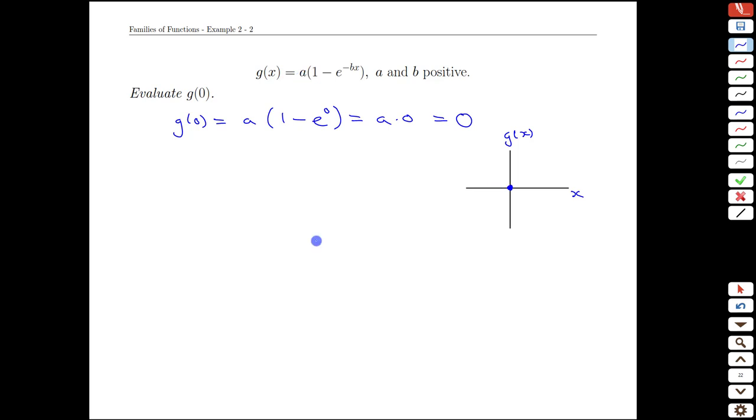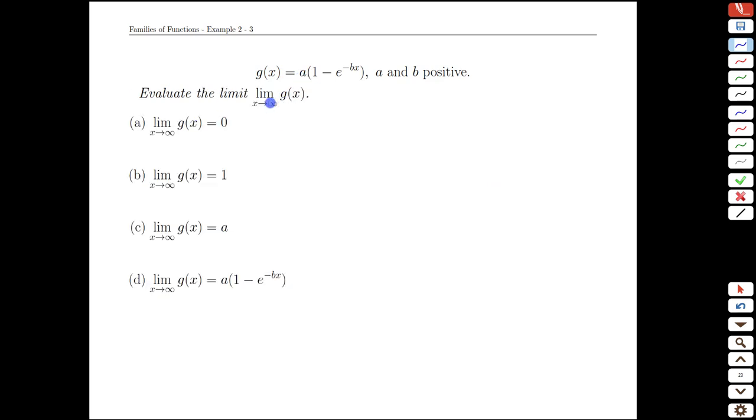Next, what happens in the long run? As we move out to larger and larger x values, take a look at this formula and ask yourself, what happens to the graph as x gets larger and larger and larger? We'll pause the video for a moment to let you give that a try. Alright, well we want to know the limit as x goes to infinity of a times 1 minus e to the minus bx. We know that x is getting larger, that's where the x is.